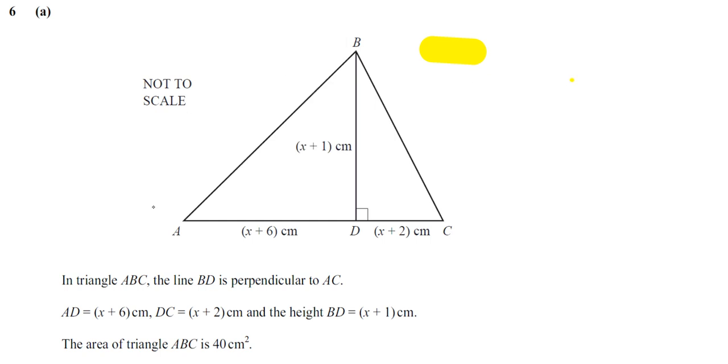Basically, they've told us that this is a triangle. That's one thing. And secondly, they've told us the area of the triangle is 40 centimeters squared. So we know it's a triangle and we know the area of the triangle. That's how we can link together the information given in the question.